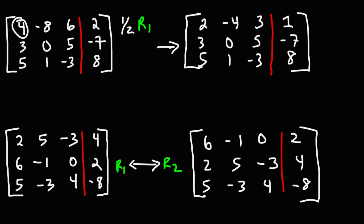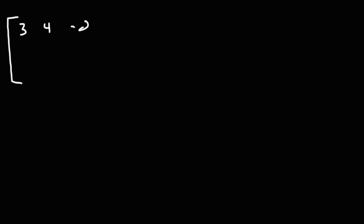Those are two common row operations you'll see in your homework. Now let's try another example that's going to be different from the first two. We have the matrix with numbers 3, 4, negative 2, 1 in row 1; negative 5, 6, 2, 7 in row 2; and 4, negative 3, 0, 2 in row 3.